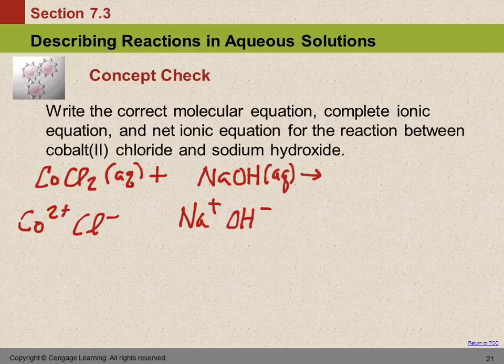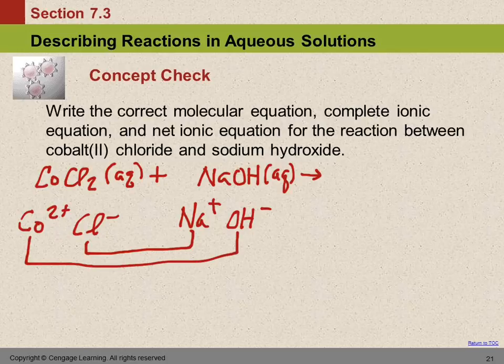Then we're going to predict what the products are by swapping partners. So we're going to put sodium and chloride together, and we're going to put cobalt and hydroxide together. We're going to write them over here. I didn't leave myself much room. So we're going to have Co2+ and OH−, and we're going to have Na+ and Cl−.